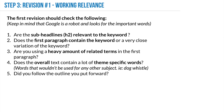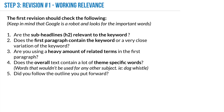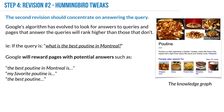Once you have your first draft, do a first revision with a few quick checks: Are the sub-headlines relevant to the keyword? Does the first paragraph contain the keyword or a very close variation? Are you using heavy amounts of related theme terms in the first paragraph? Does the overall text contain a lot of theme-specific important words? And did you follow the outline you put forward? That's your first revision checklist.